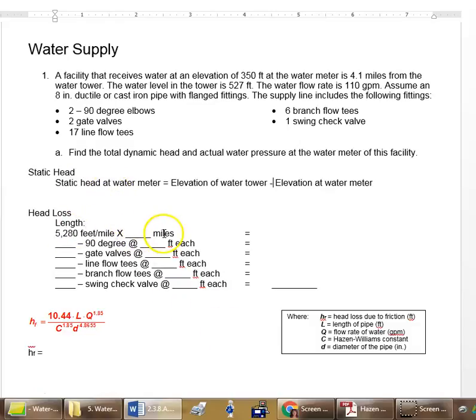So first we're going to calculate the amount of pipe we have. So we're going to take the length of the pipe, which is this mark right there, put it in here, change it over to feet right there.